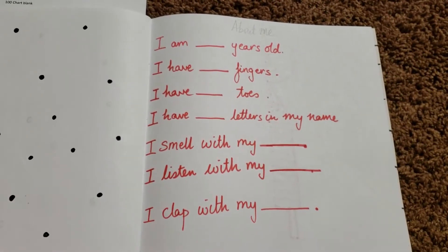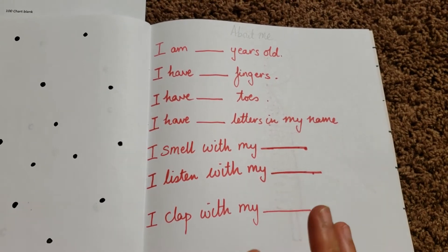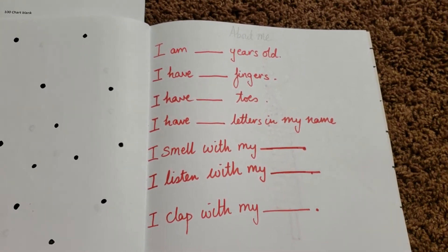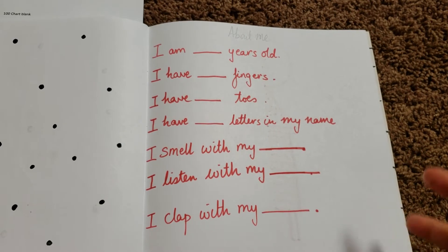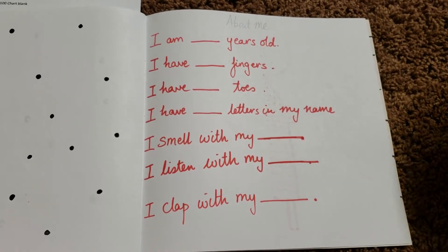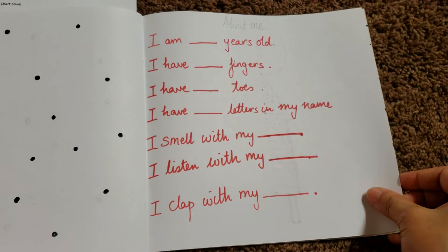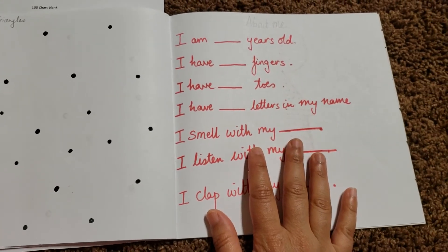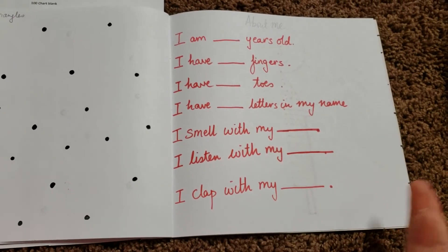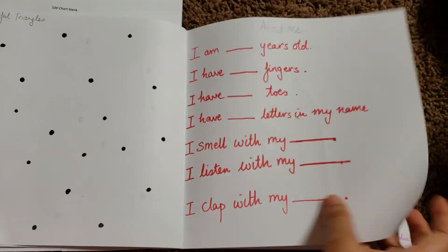Then because we're hitting kindergarten, I'm going to school a little mashup about just him. Like I'm five years old. I have how many fingers, toes. I have dash letters in my name. I smell with my, I listen with my, I clap with my. I think it's easy, but I think it's always fine to have like a little easy activity too.